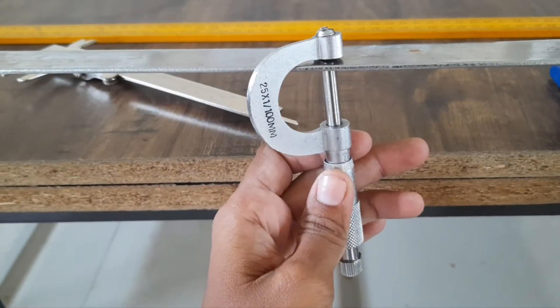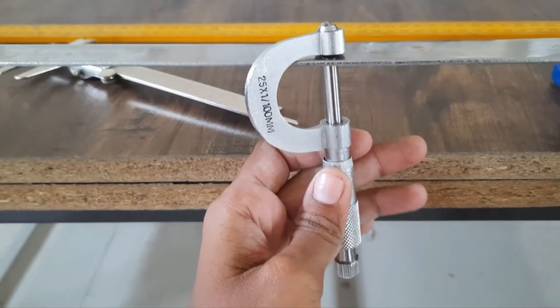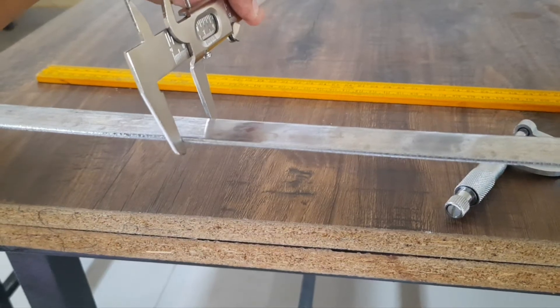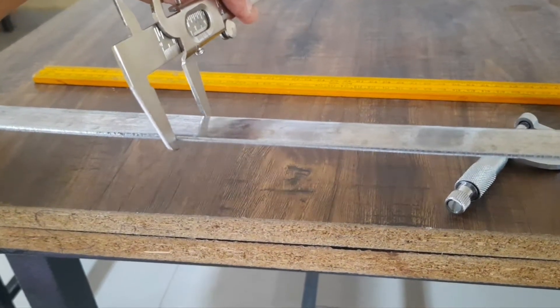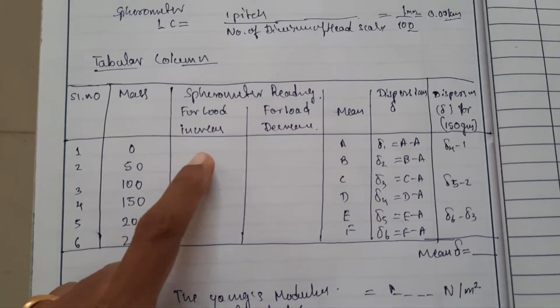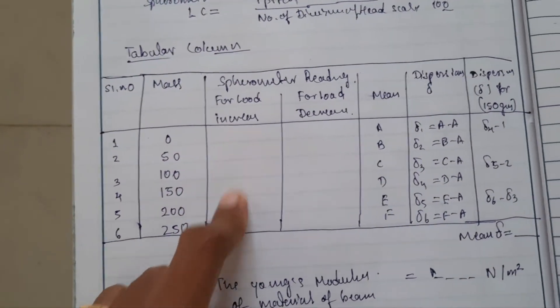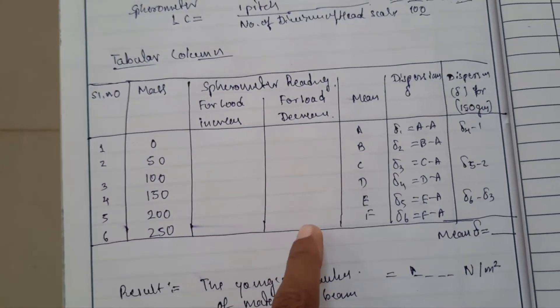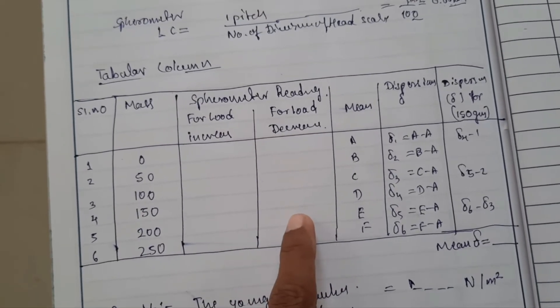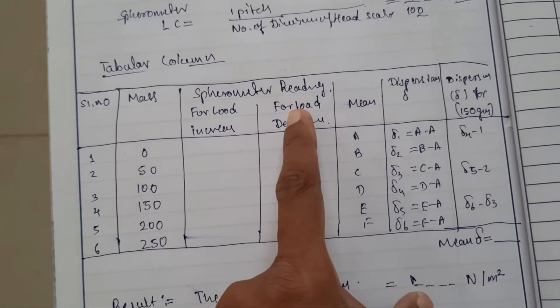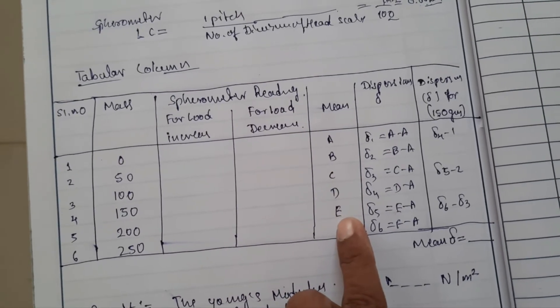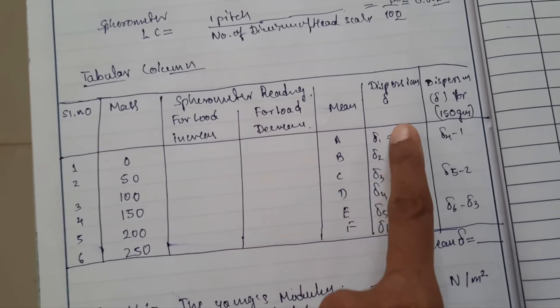To measure the thickness of the beam use the screw gauge, the breadth of the beam using the vernier caliper, and the length of the beam using the meter scale — it is almost 1 meter or 100 centimeters. Write down the spherometer readings by calculating the total reading for both loading and unloading. For unloading you should get values similar to the loading readings; then take the mean.